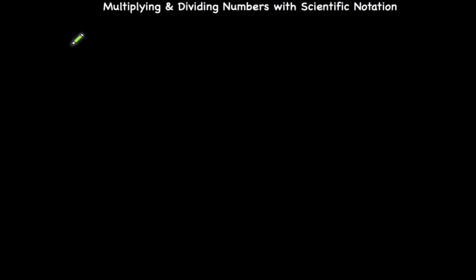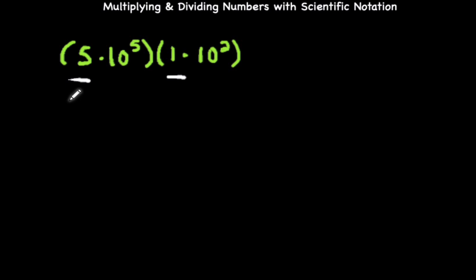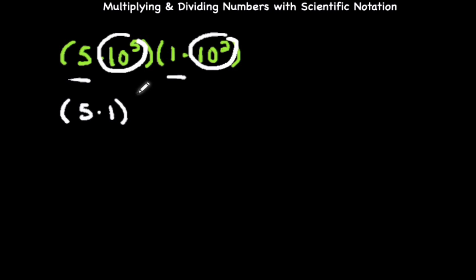Let's say you're given 5 times 10 raised to the fifth power, and that's multiplied by 1 times 10 squared. We're going to multiply the first factors, which are 5 and 1, enclosing those numbers inside parentheses. Then we're going to multiply the second factors: 10 raised to the fifth power times 10 squared.